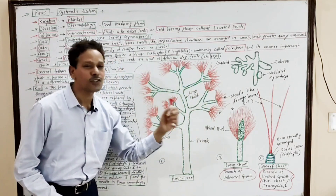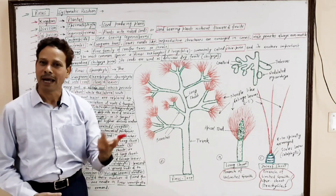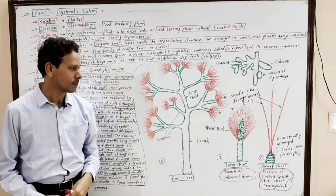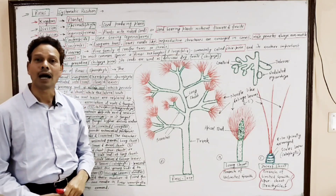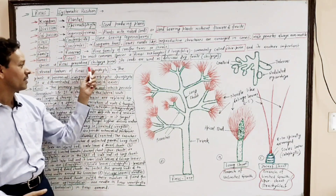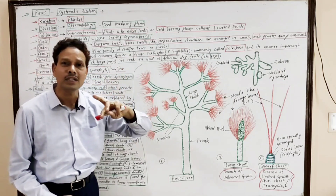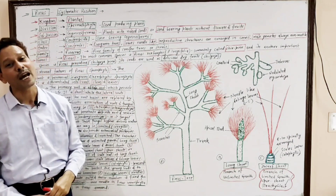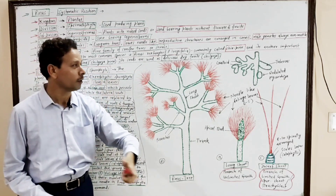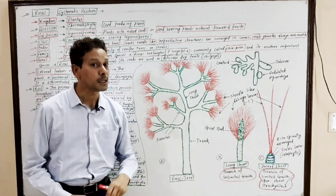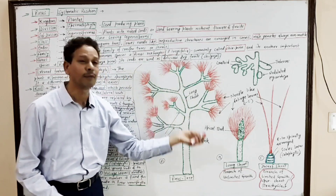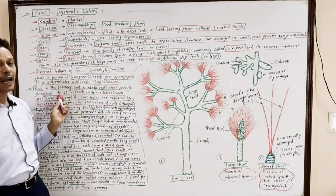Now we will discuss the external features and morphology of Pinus. It is a perennial plant that persists for several years. It is an evergreen plant because the needle-like leaves remain on the plant from three to ten years. These plants are xerophytes — they grow in dry, xeric conditions. The adult plant body is a sporophyte, which produces two types of spores: microspores and megaspores.